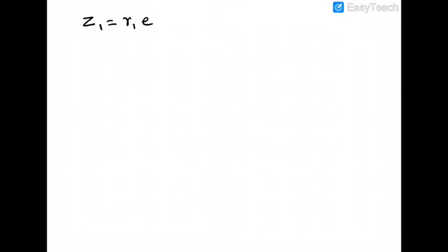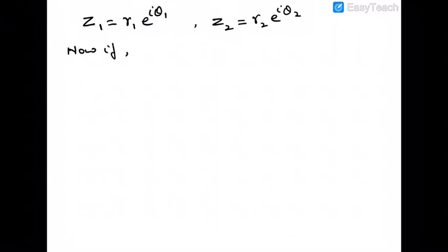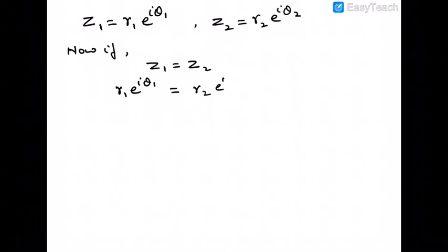Now, if z₁ = r₁·e^(iθ₁) and z₂ = r₂·e^(iθ₂), then r₁·e^(iθ₁) = r₂·e^(iθ₂) is possible if and only if r₁ = r₂ and θ₂ = θ₁ + 2πn.